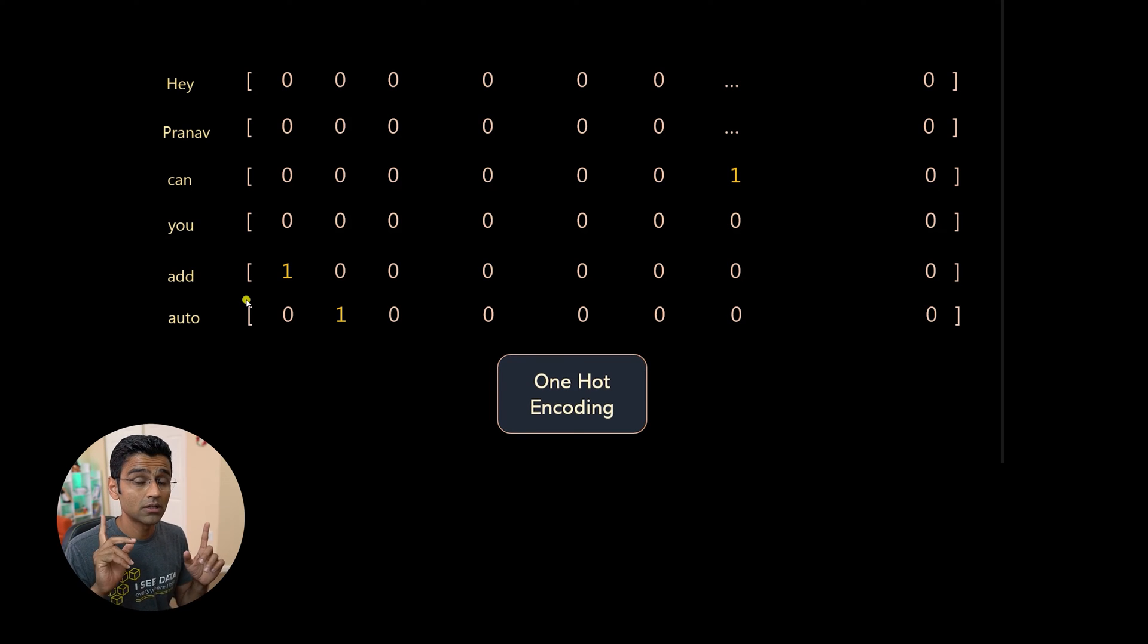Again, if you learn machine learning, you would know about one hot encoding because it's a popular technique used to represent categorical variables in machine learning. So again, not a rocket science. Very simple concept.